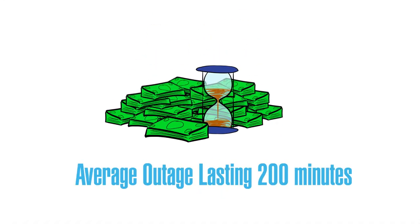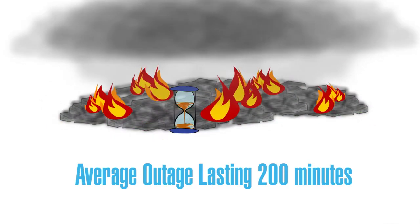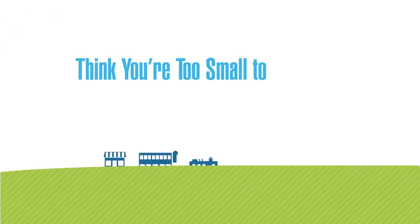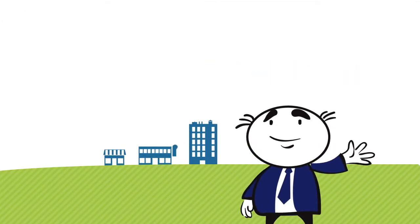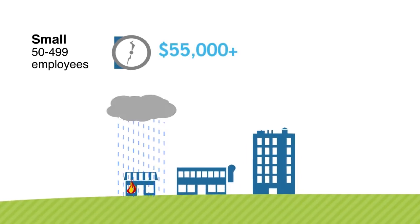Consider that the average IT outage lasts 200 minutes, and you see how quickly a big pile of money can go up in smoke. Think you're too small to get burned? Even an organization with $50,000 or so loses roughly $55,000 an hour when business-critical apps get zapped.